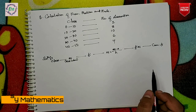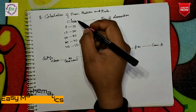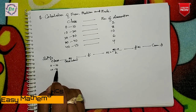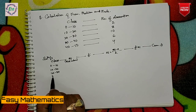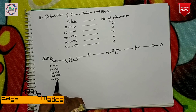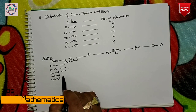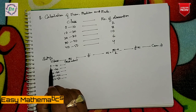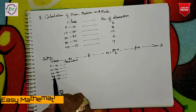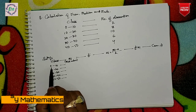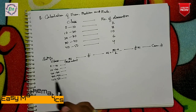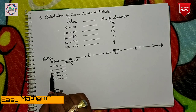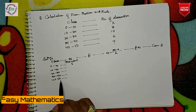Now if you want to make the class intervals: 0 to 10, 10 to 20, 20 to 30, 30 to 40, 40 to 50. If you want to use the classroom, use the class mark. The first class mark is: (0 + 10) divided by 2, which equals 5. That is the class mark.